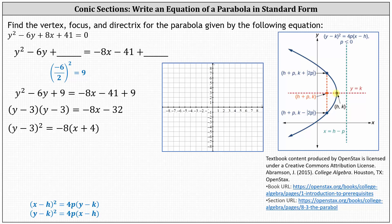For the next step, let's find the vertex, which has coordinates h comma k. Because we have x plus 4, the x coordinate is negative 4, and because we have y minus 3, the y coordinate is positive 3. The vertex is the point negative 4 comma 3. Let's go ahead and plot this on the coordinate plane.